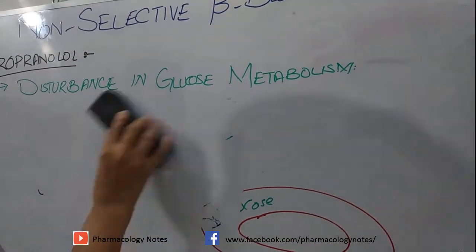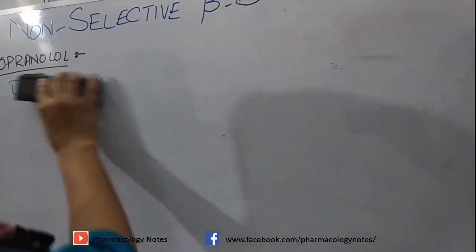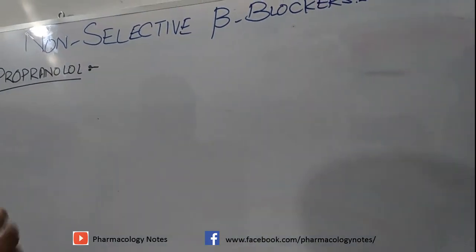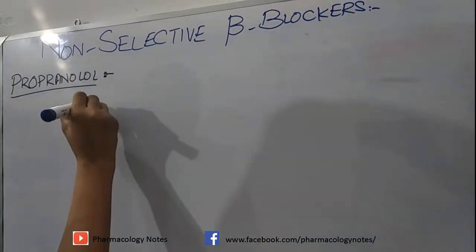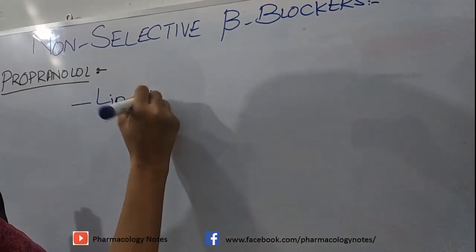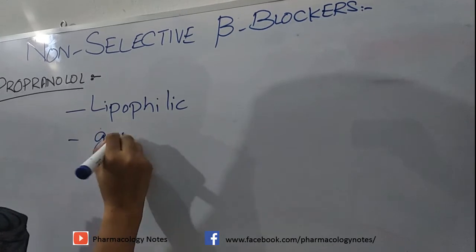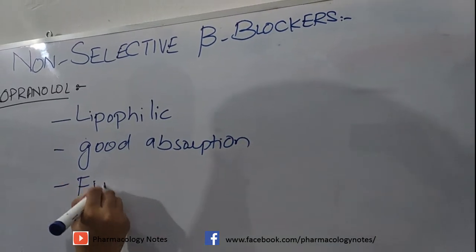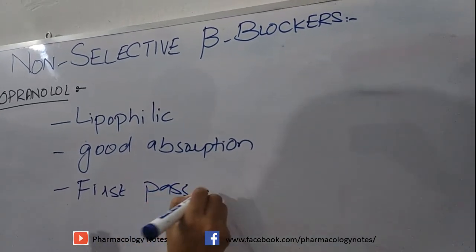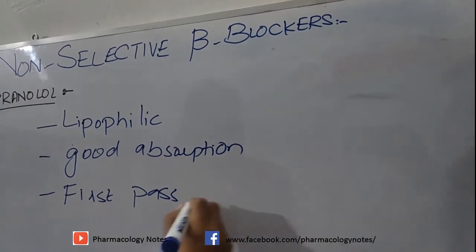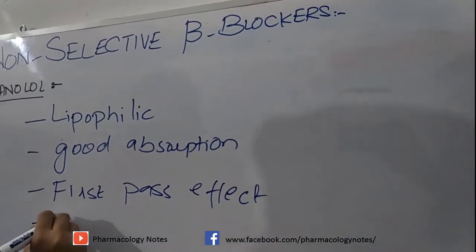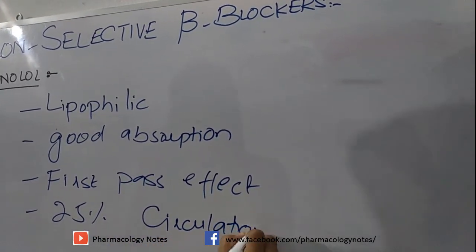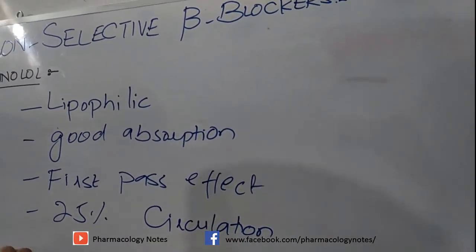Regarding the pharmacokinetics of propranolol: it is given orally and has good absorption because it is a lipophilic drug. However, it has a high first-pass effect. When given orally, only about 25% of the drug reaches systemic circulation. It is excreted through urine.